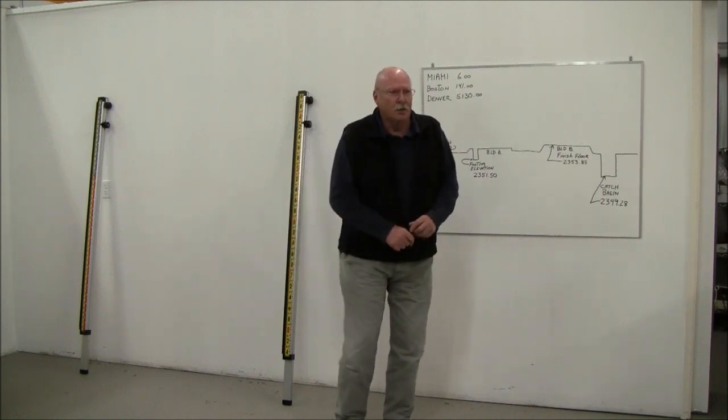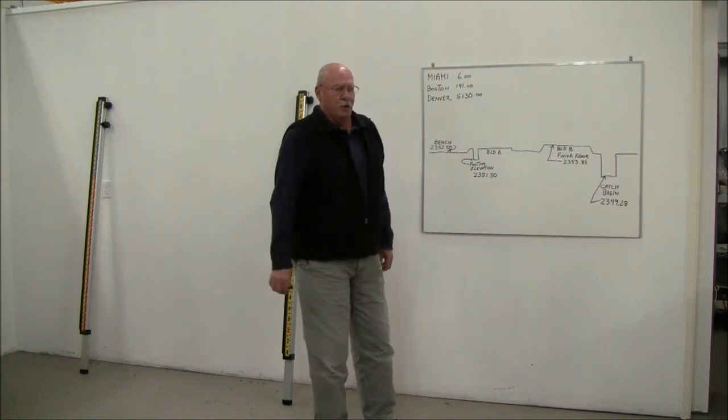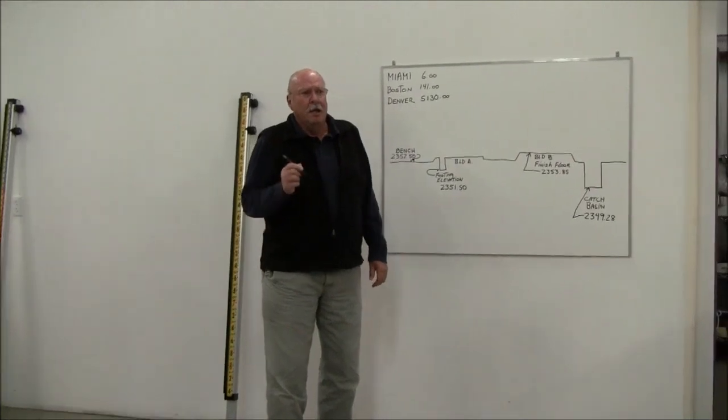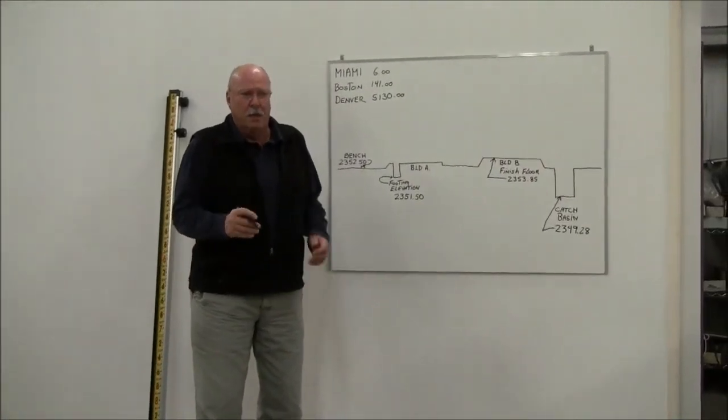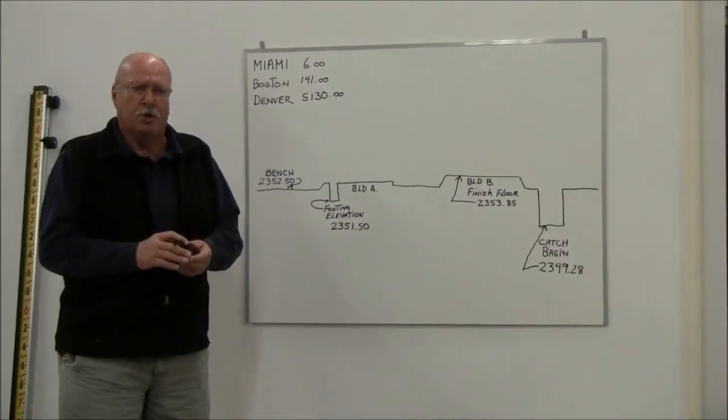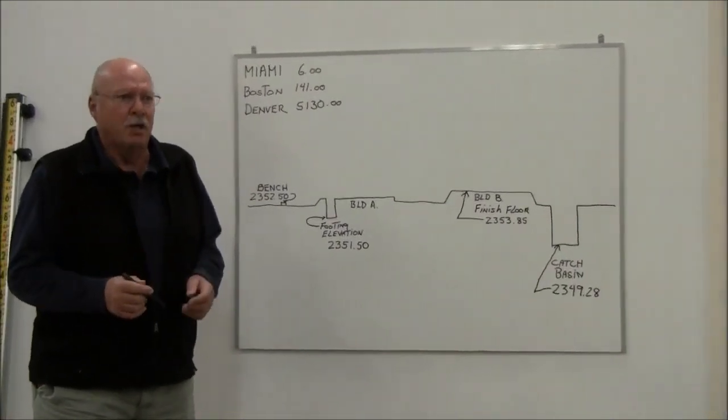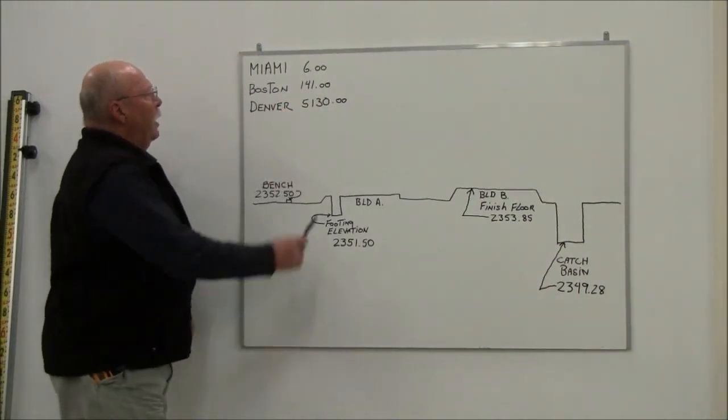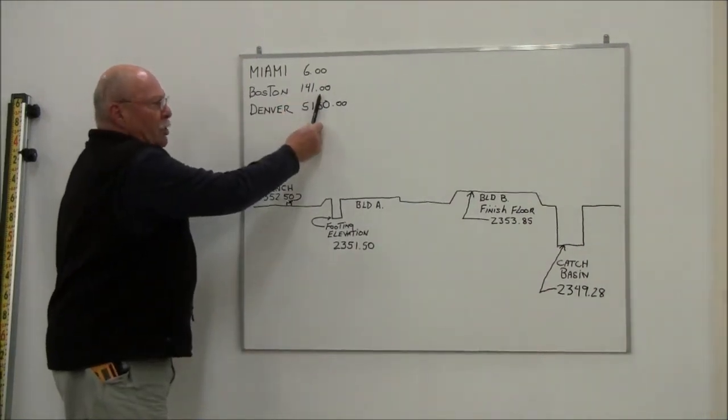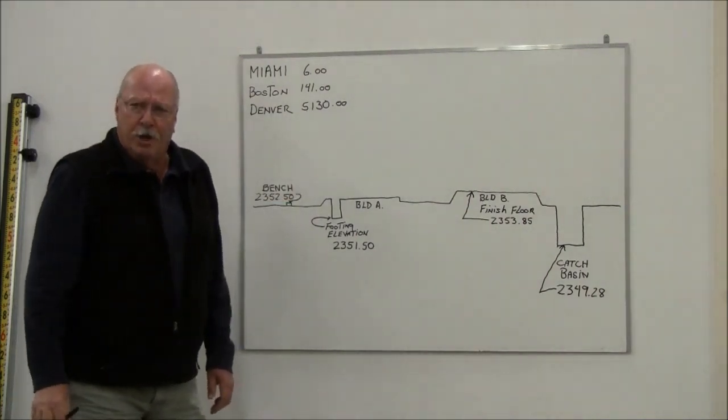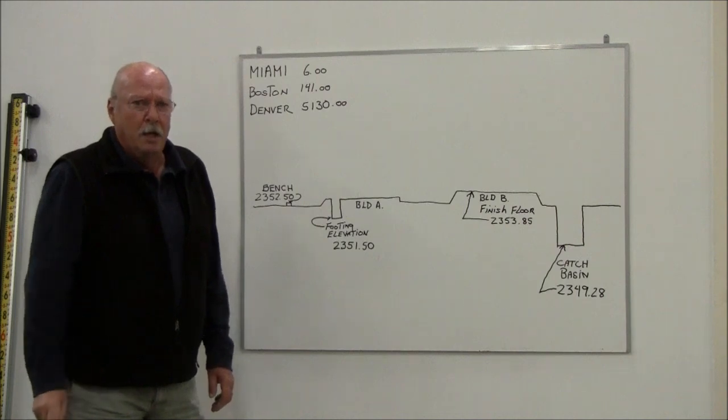So let me start with illustrating a little bit about how those elevations come about. When a job is set up, typically the job is going to be depicted in true elevation with a starting point which is called your benchmark. And that benchmark, for example, if you're in Miami could be 6 feet. If you're in Boston, it could be 141 feet as your starting point. If you're in Denver, it could be 5,130 or anywhere in between.